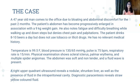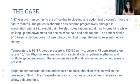His temperature is 99 degrees Fahrenheit. Blood pressure is 130 by 65 mmHg. Pulse is 75 beats per minute and respiratory rate is 15 per minute. Physical examination shows scleral icterus, palmar erythema, and multiple spider angiomas. The abdomen was soft and non-tender and a fluid wave is present. A right upper quadrant ultrasound reveals a nodular shrunken liver, as well as the presence of fluid in the intraperitoneal cavity. Diagnostic paracentesis reveals a straw-yellow colored fluid.